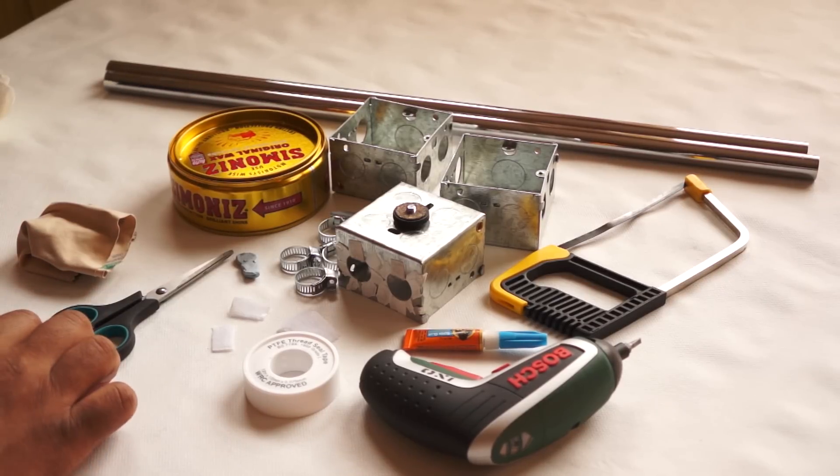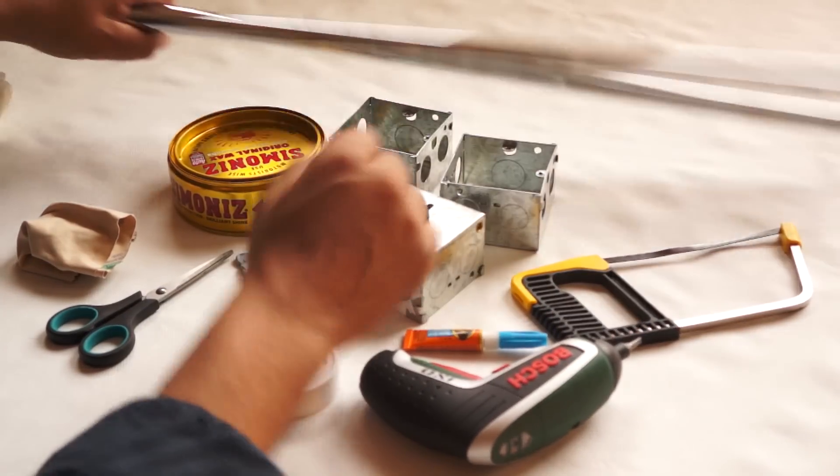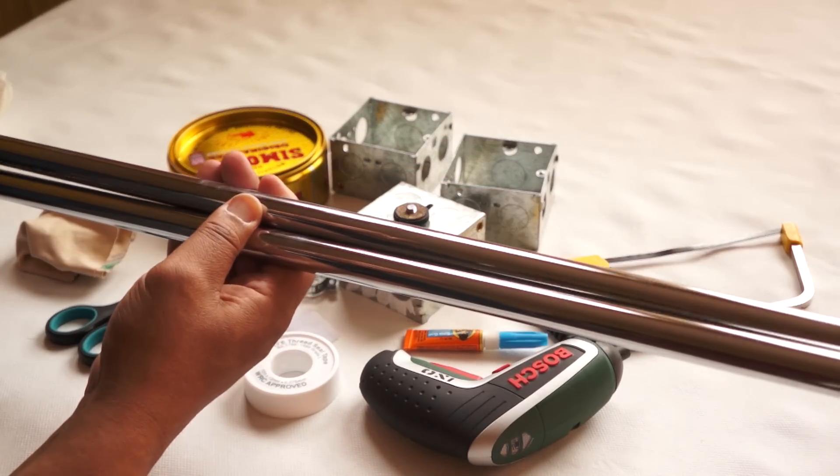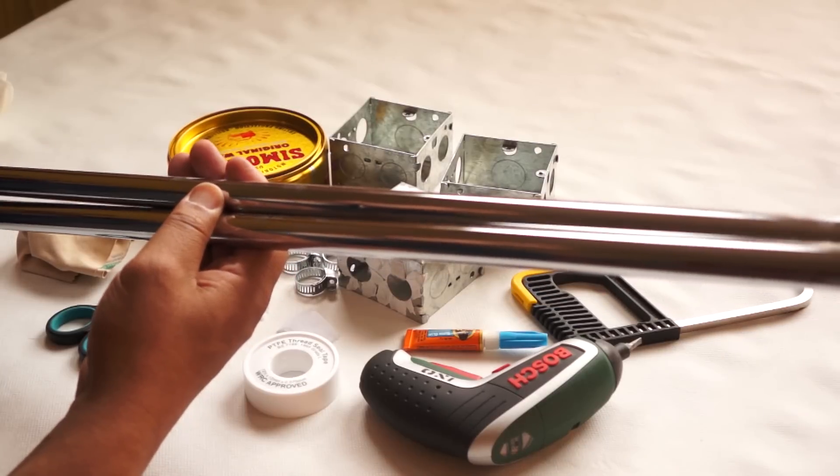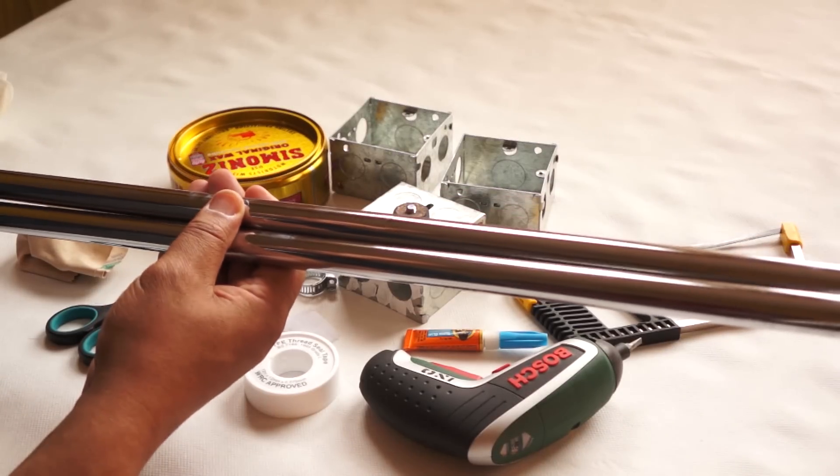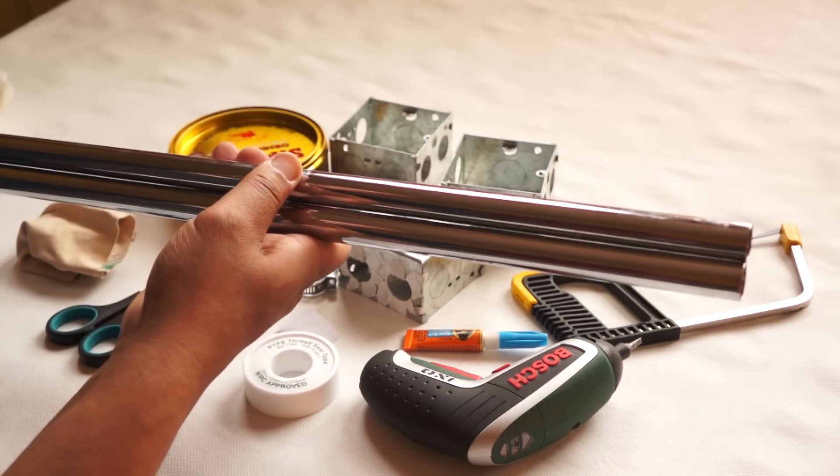As you can see it's quite simple. You need a hacksaw. I bought these two 1.22cm chrome tubes and cut them in half with the hacksaw. That's the hardest bit of work actually because it's quite heavy going with a hacksaw, but it's doable.